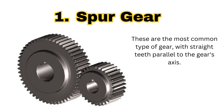Let's start with the spur gear. Spur gears are the most common type of gear used in industry. These gears have straight teeth and the teeth are parallel to the axis of the gear. They are used in cars, bikes, and home appliances equipment, and they are great for speed control.